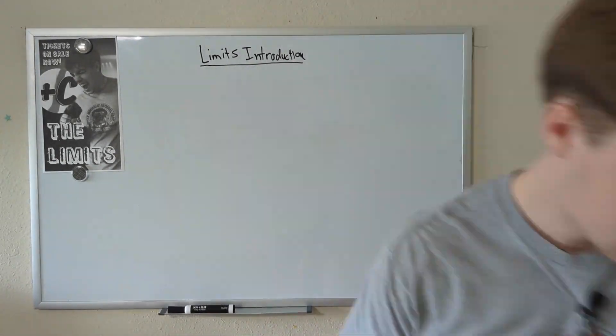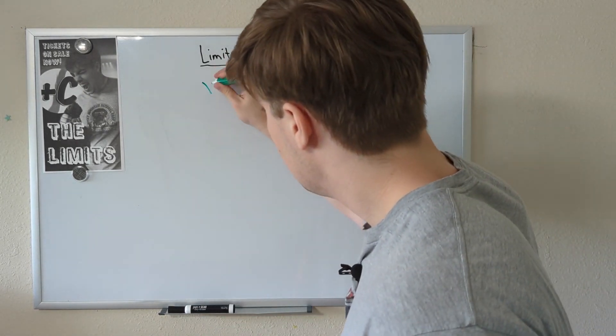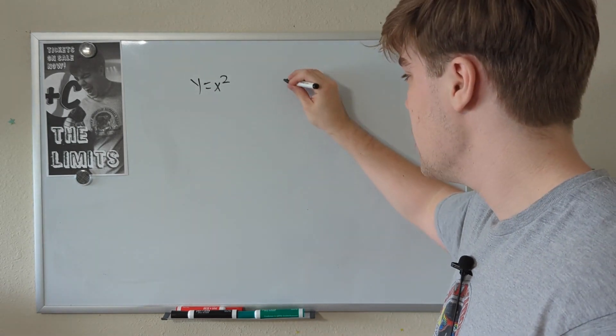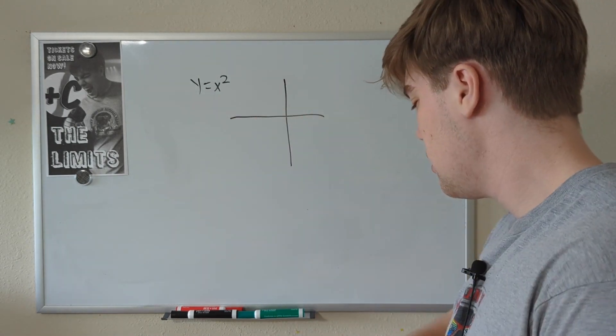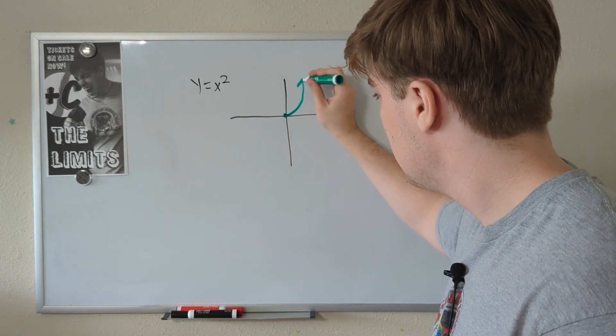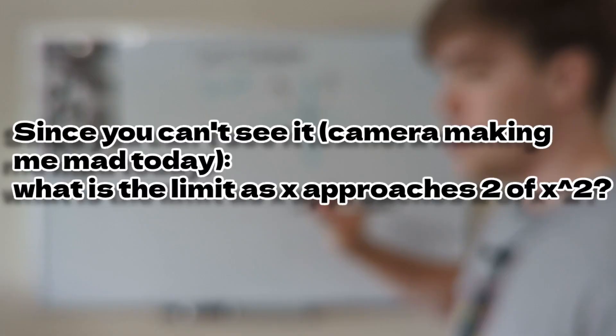Let me explain. Let's use a function we all know. We're going to use the function y equals x squared. We all know what that looks like, right? We have our graph here. And let me take this green pen. It looks something like this, and that, and that. It's an even curve on both sides.